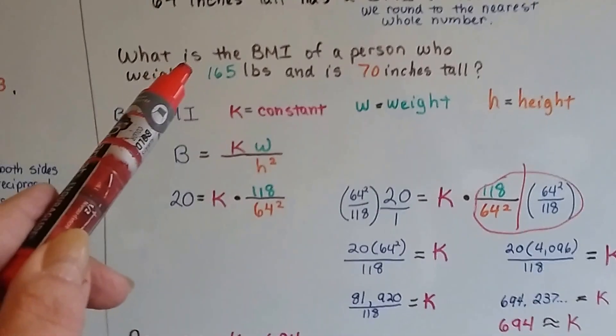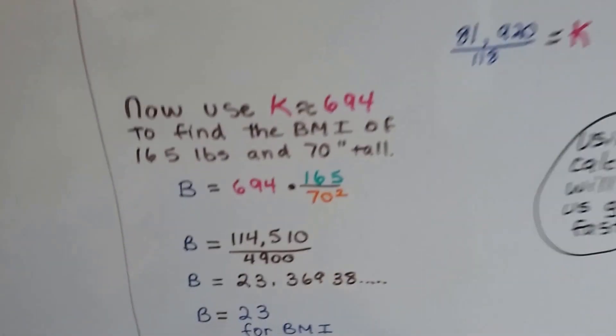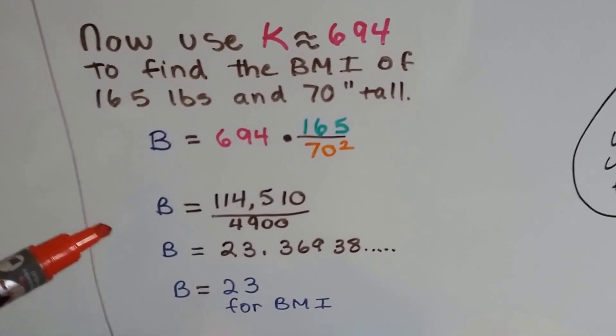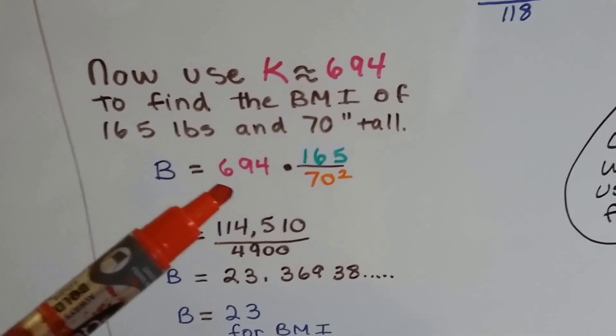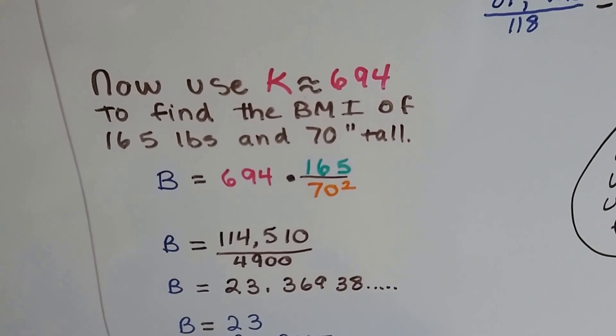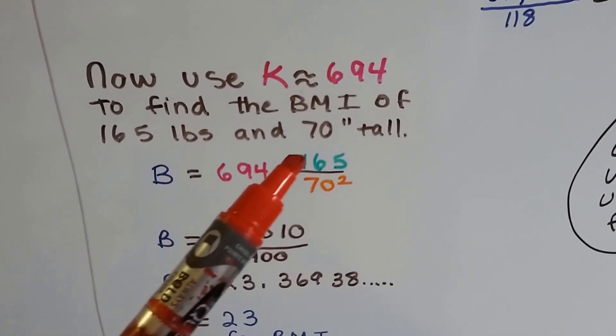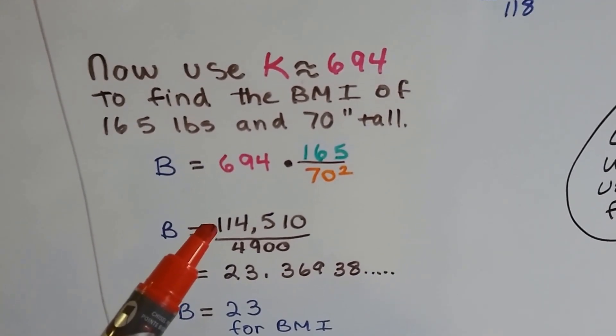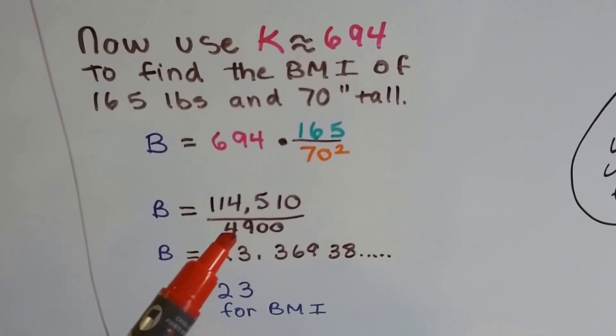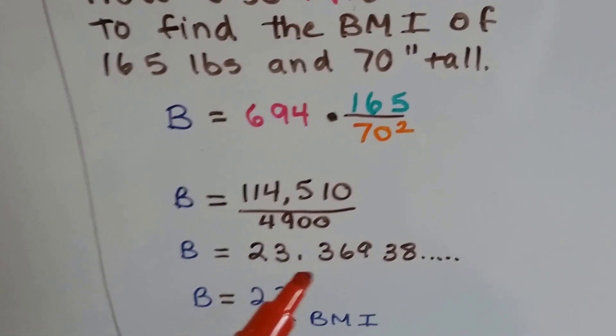Now we can solve this 165 pound person that's 70 inches tall. We plug those values in and use approximately 694. So we get 694 times 165 divided by 70 squared. Use our calculator again and we multiply 694 by 165 and we get 114,510. And 70 times 70 is 4900. So we get this on our calculator and we can just round it to 23.